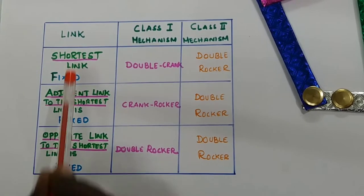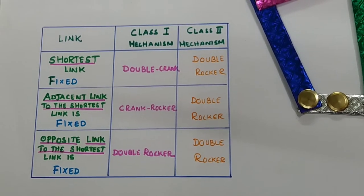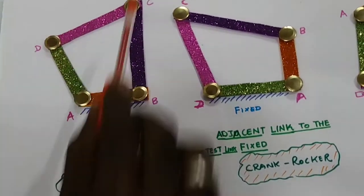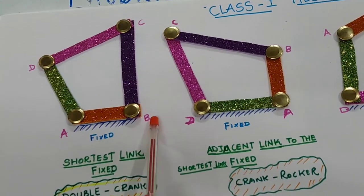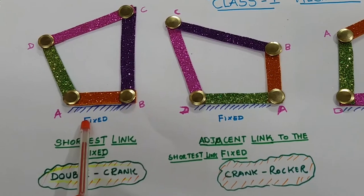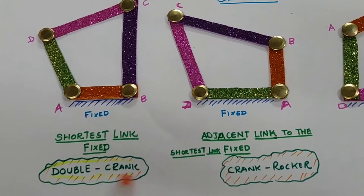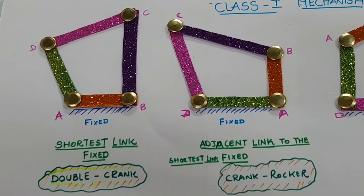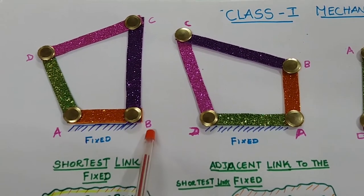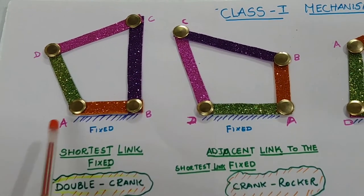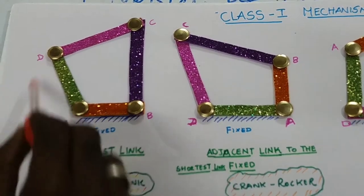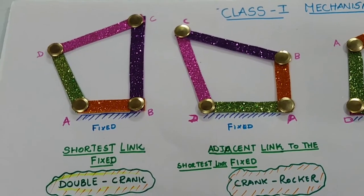Now we discuss the shortest link fixed case. Shortest link AB is fixed — you can get a double crank mechanism. Here, double crank means AD and BC both act as cranks, so two links act as a crank.